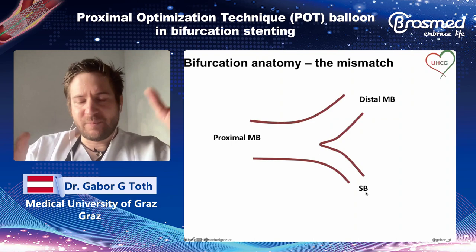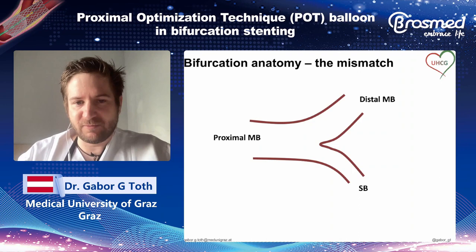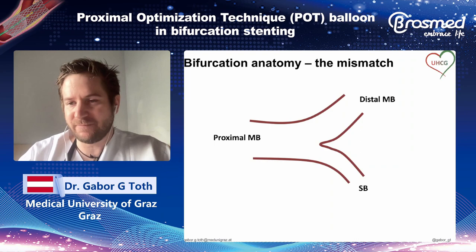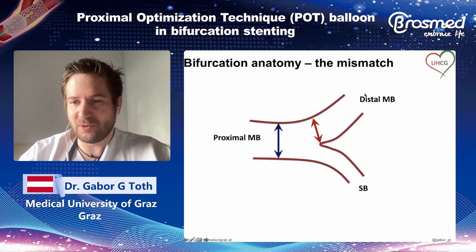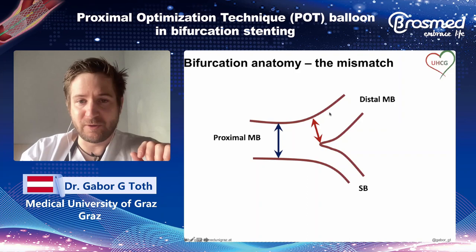In bifurcations, one of the major things you have to remember about the bifurcation anatomy is that you are dealing with three different diameters — at least three: the diameter for the distal main branch, the side branch, and the proximal main branch. So whenever you put a stent across the bifurcation, your stent has to cope with two different dimensions.